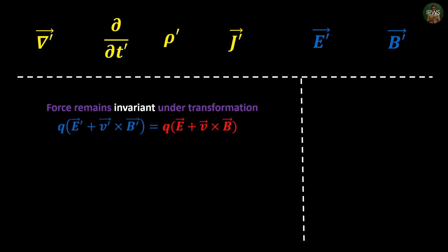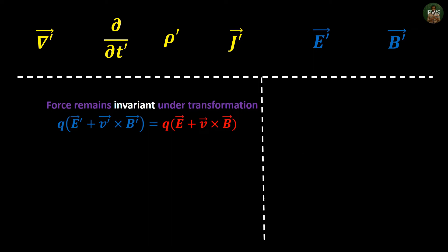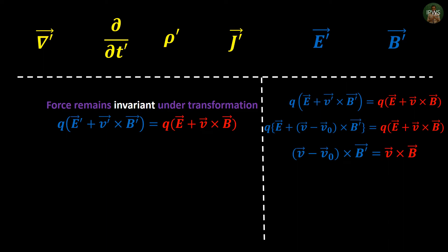Now here comes a problem. You might be tempted to keep electric field unchanged since distance between two points and charges remains unchanged in Galilean transformation, but it brings more problem with it. So when we substitute E' = E, v' × B' becomes (v - v0) × B.